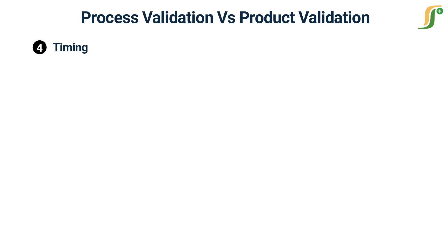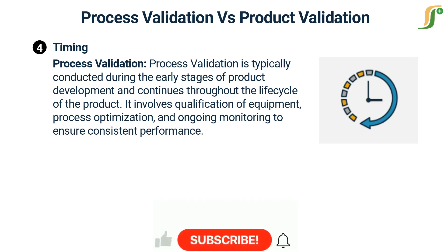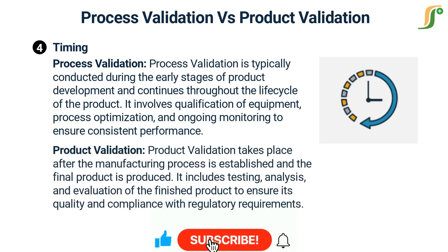Timing: Process validation is typically conducted during the early stages of product development and continues throughout the life cycle of the product. It involves qualification of equipment, process optimization, and ongoing monitoring to ensure consistent performance.